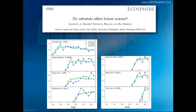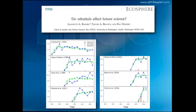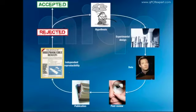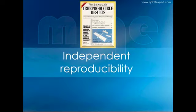Finally, independent reproducibility is the next beacon. After all, this is why we publish and tell our peers about our research—because we hope somebody is going to be able to reproduce what we've said and independently validate our research.